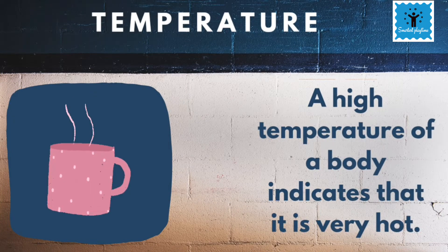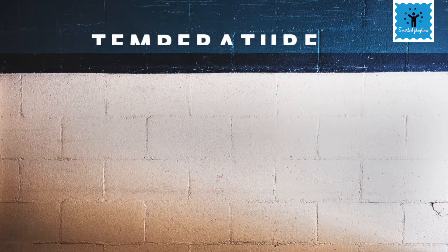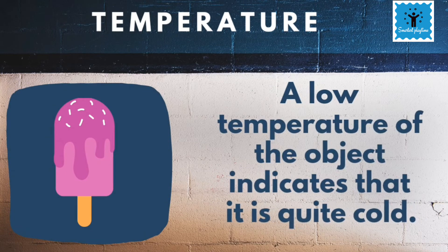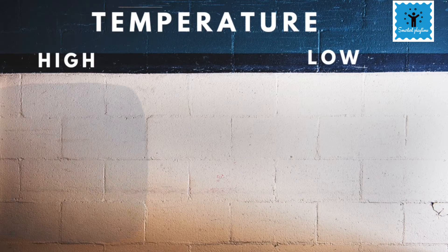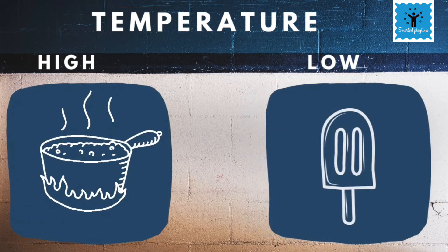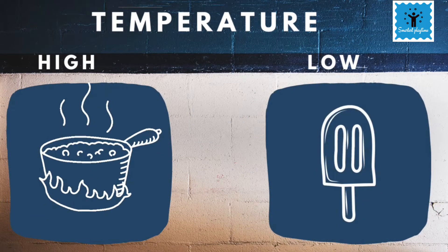A low temperature of an object indicates that it is quite cold. For example, the temperature of boiling water is quite high so boiling water appears to be very hot. On the other hand, the temperature of melting ice is quite low, so ice appears to be very cold on touch.